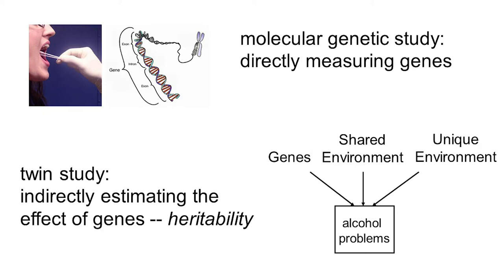In the study I did, I estimated the proportion of variation in alcohol problems attributed to genetic factors, shared environmental factors — things like social class, race, and neighborhoods — and unique environmental factors, things that are specific to the individual. The heritability is the proportion of variation in alcohol problems that can be explained by genetic factors, and that's mostly what I'll be focusing on today, not the environmental factors.